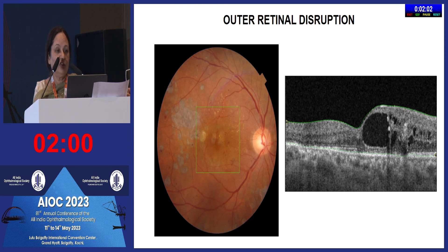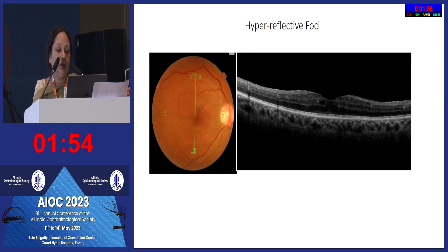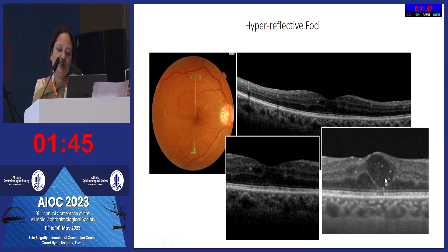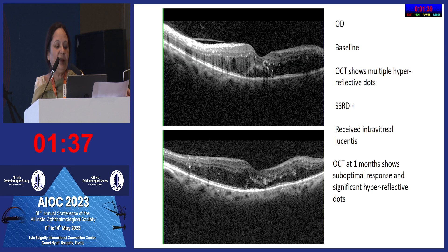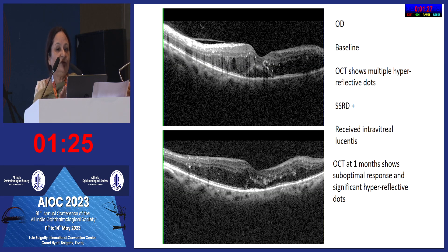Hyper-reflective foci on OCT are easily seen by anyone without needing a retina expert. These foci, especially when associated with sub-retinal fluid, indicate an inflammatory component where anti-VEGFs may not work well — an early switch to steroids should be considered. Similarly, sub-foveal serous detachment, especially after cataract surgery, suggests these patients would respond better to steroids than to anti-VEGFs.